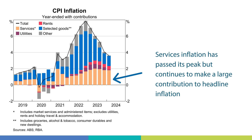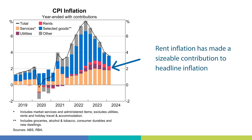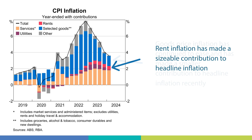The orange bars show the contribution of selected services to headline inflation. Services inflation has passed its peak but remains elevated and continues to make a large contribution to inflation. This reflects ongoing high input prices for firms such as labour, insurance, legal, accounting, and other administrative services. Rent inflation — the red bars — has also made a sizeable contribution to headline inflation and this is expected to persist. In contrast, goods price inflation has continued to ease, making a smaller contribution to headline inflation recently, as shown by the blue bars. The RBA's liaison program, which speaks directly to businesses, has found that supply chains are largely operating as normal after several years of disruption.